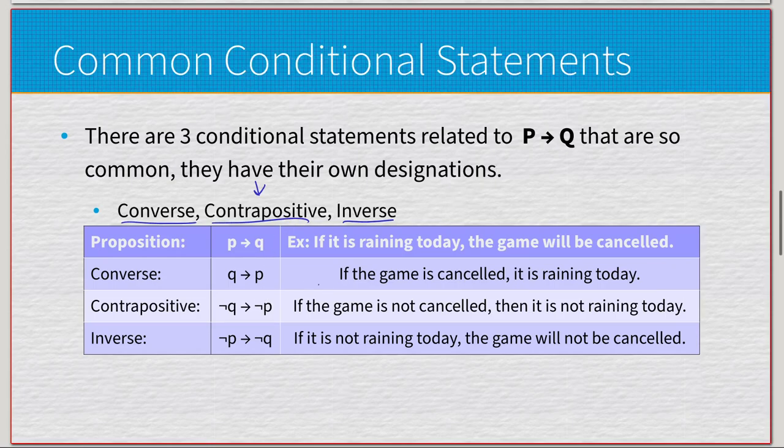They're all transformations of the exact same conditional statement. Example: we have P implies Q. If it is raining today, the game will be cancelled. Converse is if the game is cancelled, it is raining today. Contrapositive is if the game is not cancelled, then it is not raining today. Inverse is if it is not raining today, the game will not be cancelled. Converse is Q implies P, so we reverse the order. Contrapositive is the reversed order but both propositions are negated. Inverse is the original but both propositions are negated.